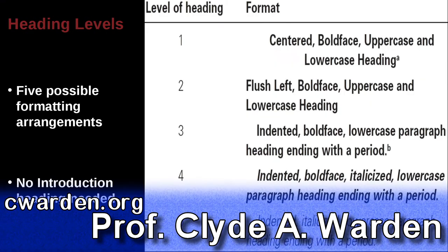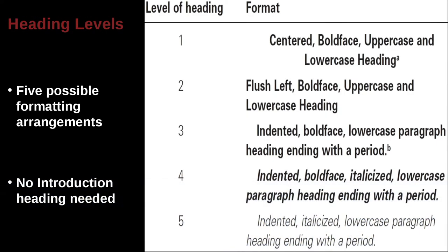So let's go ahead and jump right in, and we can begin with the headings. What we have is basically the APA recommends five possible formatting selections or possibilities for your headings. Now if we look over here in this section where we have an example, you can see that the first heading, second heading, third heading, fourth heading, fifth heading.